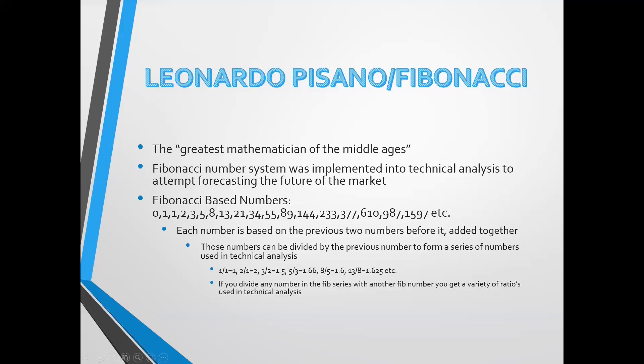Fibonacci-based numbers are kind of interesting because this goes across all aspects of life. As Fibonacci detailed it, I've had it explained to me that it goes all the way into the number of twigs on a tree — so it's pretty interesting. That being said, you can see the sequence of numbers there. Each of the numbers is based on the previous two numbers added together. Those numbers can then be divided by the previous number to form a series of numbers used in technical analysis. For example, dividing any number in the Fibonacci series with another Fibonacci number will give you a variety of ratios used in technical analysis.